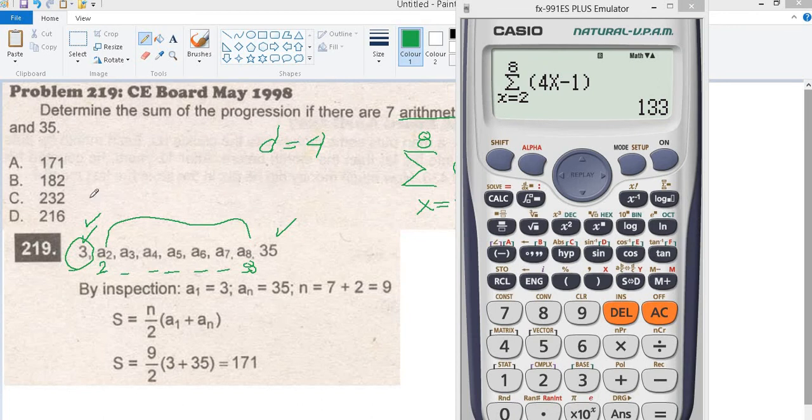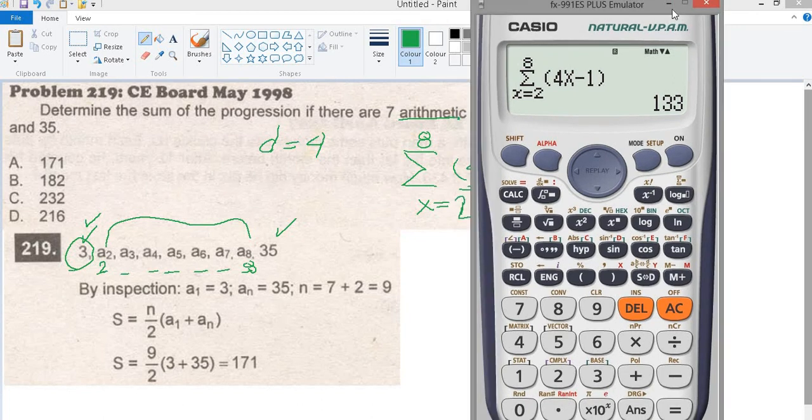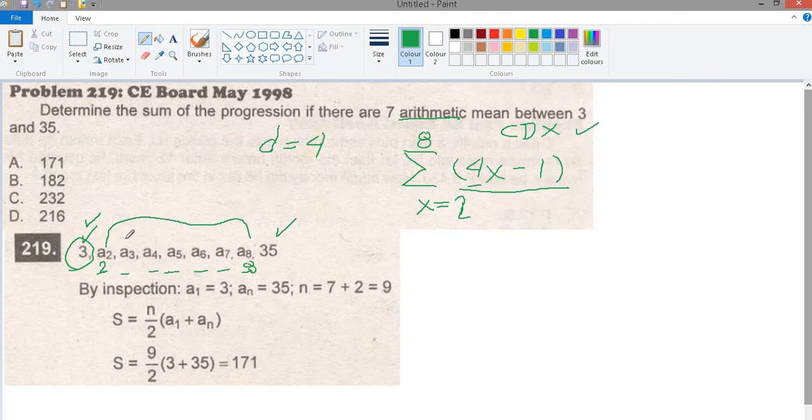We have 133. The sum starting from here down to here, the sum is 133.